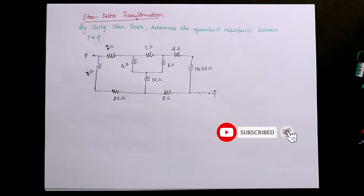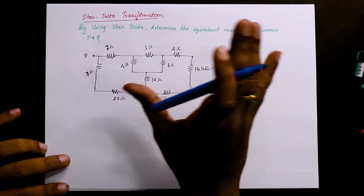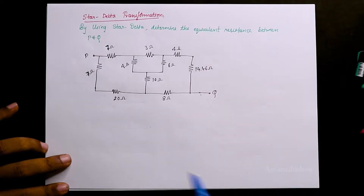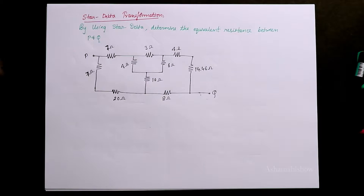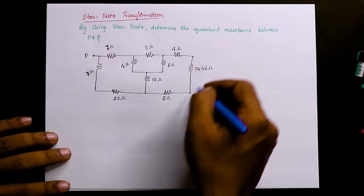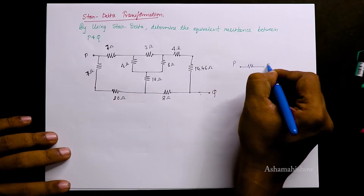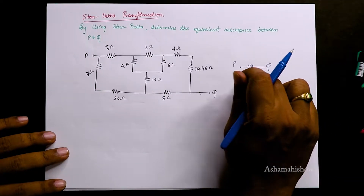Welcome to the show. Today the topic is: using star-delta transformation, determine the equivalent resistance between P and Q. This is the problem given, under the topic of star-delta transformation. We need to find the resistance between P and Q, so this entire complex network should be transformed such that P and Q have only one resistance — some total resistance R_total.